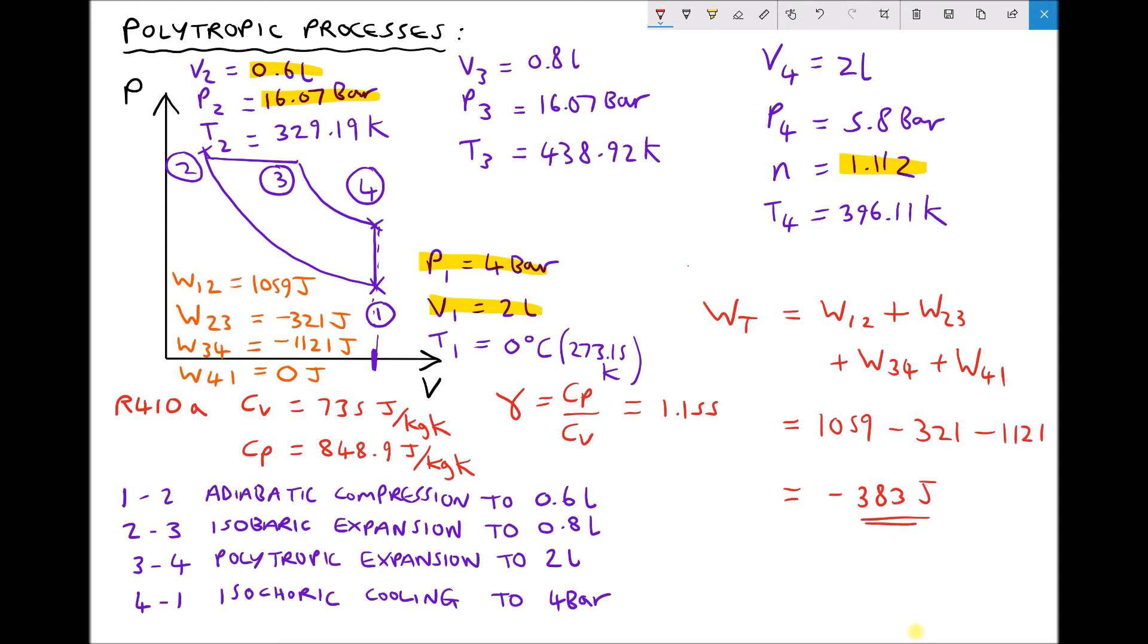So the important thing here is we have a magnitude of work of 383 joules, but we also know that that's negative. Right at the start we said if we have a negative value, then that represents work being done by the gas on the surroundings. So in this cycle we're actually producing work by compressing and then expanding our refrigerant R410A.